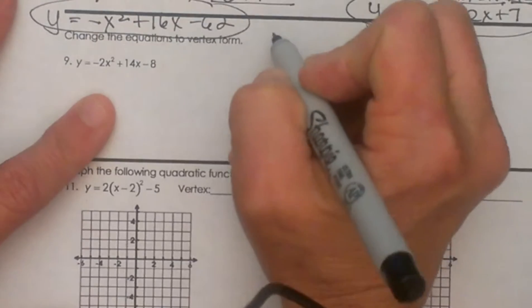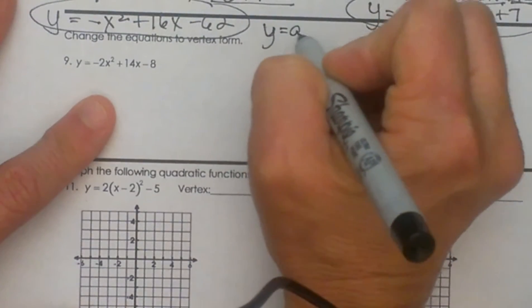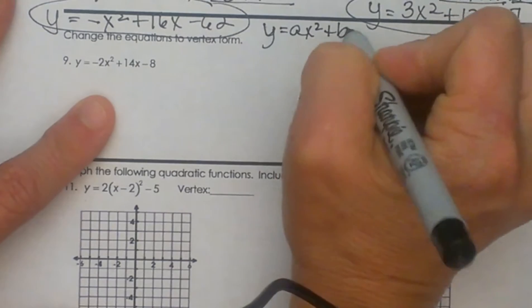So let's write the two forms out. Standard form is y equals ax squared plus bx plus c.